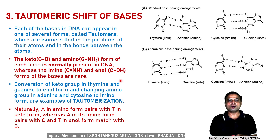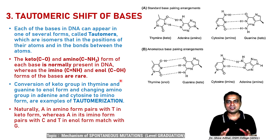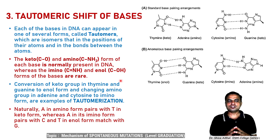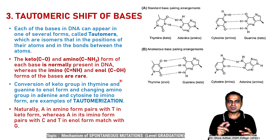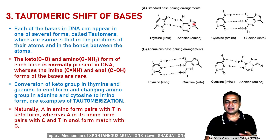The third example is tautomeric shifts. Each biomolecule — adenine, guanine, cytosine, and thymine — exists in keto forms and enol forms. Each of the bases in DNA can appear in several forms called tautomers, which are isomers that differ in the position of their atoms and in the bonds between the atoms. Thymine is in the keto form and adenine is in the amino form — this is normal Watson and Crick pairing. Similarly, cytosine is in the amino form and guanine is in the keto form — C-G, A-T normal base pairing.